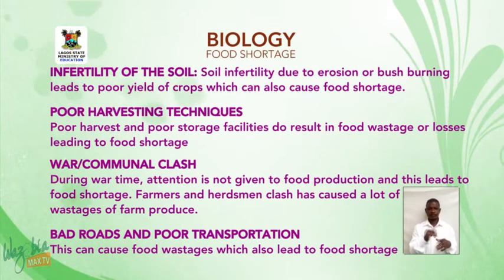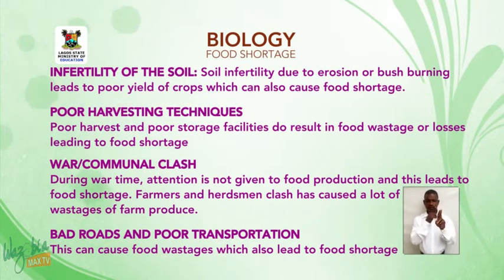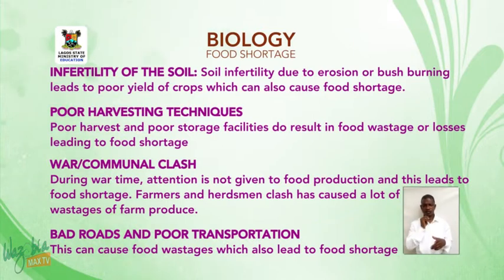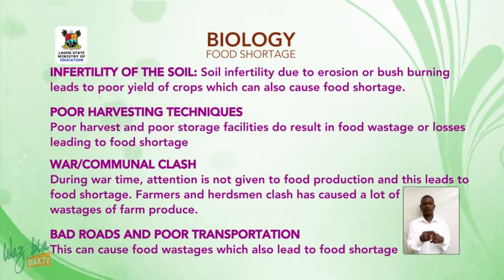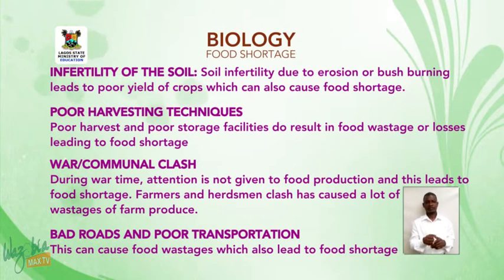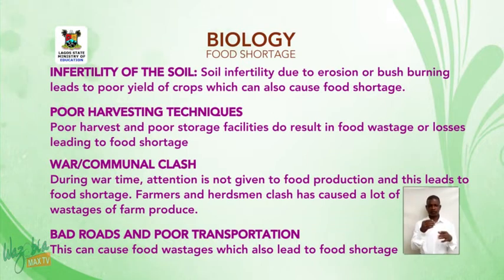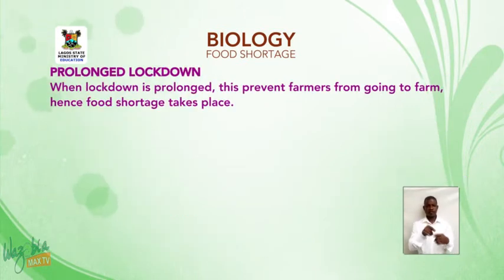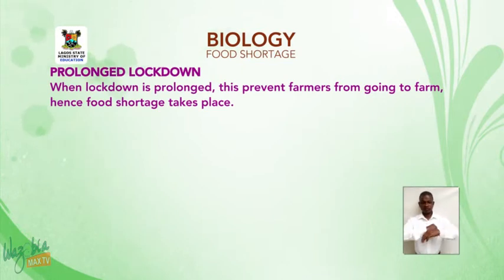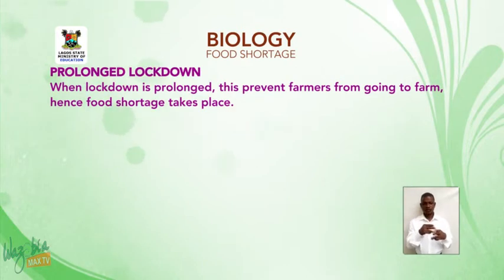Poor harvesting techniques and poor storage facilities result in food wastage or losses, leading to food shortage. During war time, attention is not given to food production and this leads to food shortage. Farmers and herdsmen clashes have caused a lot of wastage of farm produce. Bad roads and poor transportation can cause food wastage, which also leads to food shortage. When lockdown is prolonged, this prevents farmers from going to farm, hence food shortage takes place.